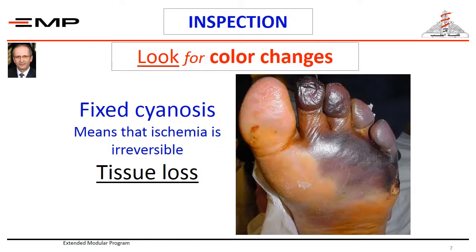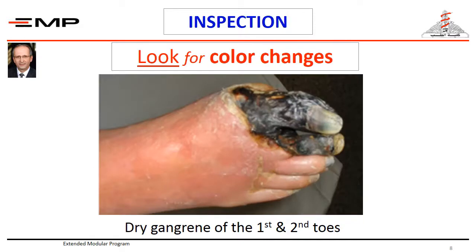We are still talking about colour change. This is a late presentation of a patient with ischemia — you can notice the blue colour of the toes. It is a fixed colour change. These toes are already lost; these toes are dead. A permanent blue or even black colour is termed gangrene — a fixed colour change with permanent tissue loss.